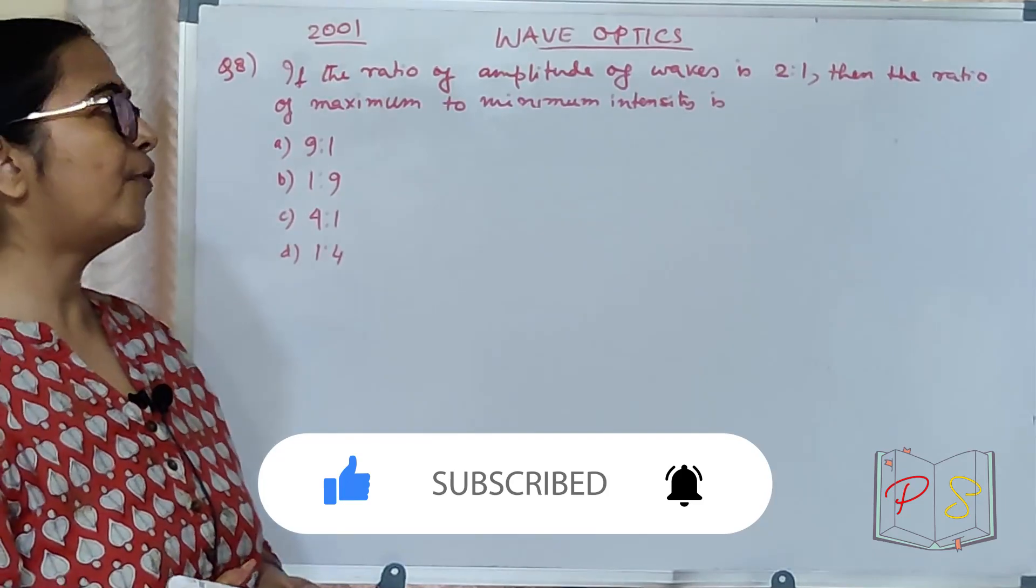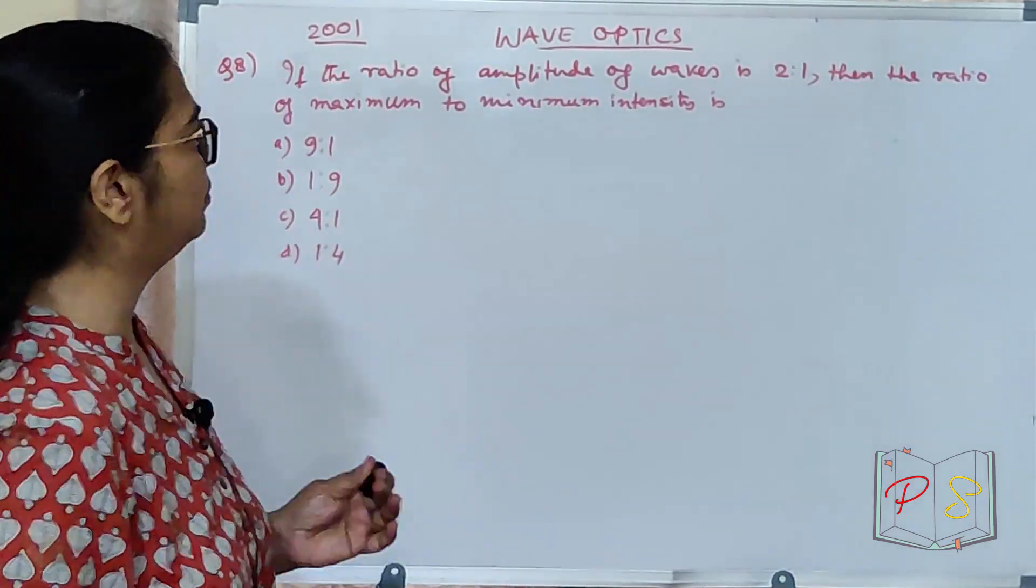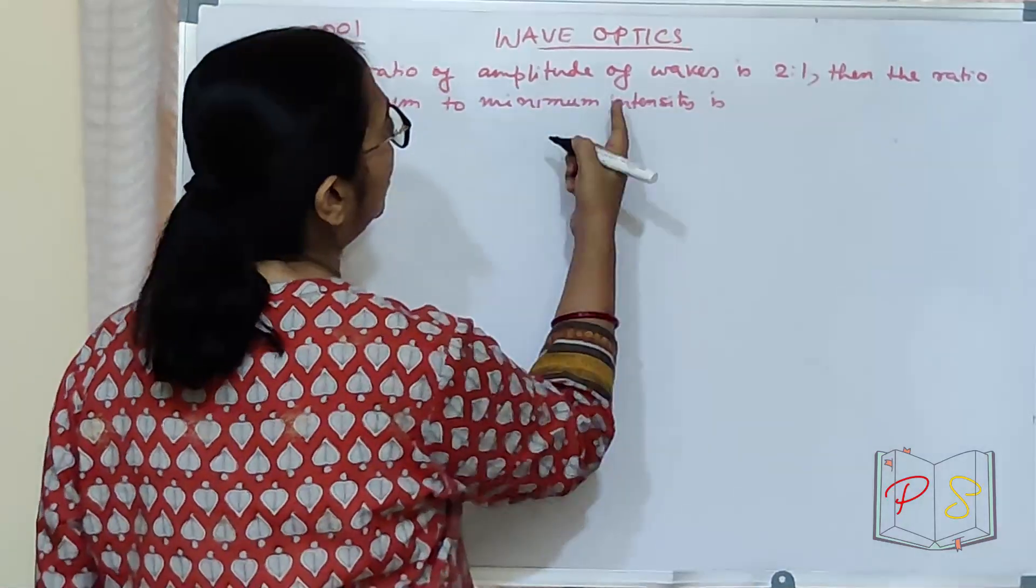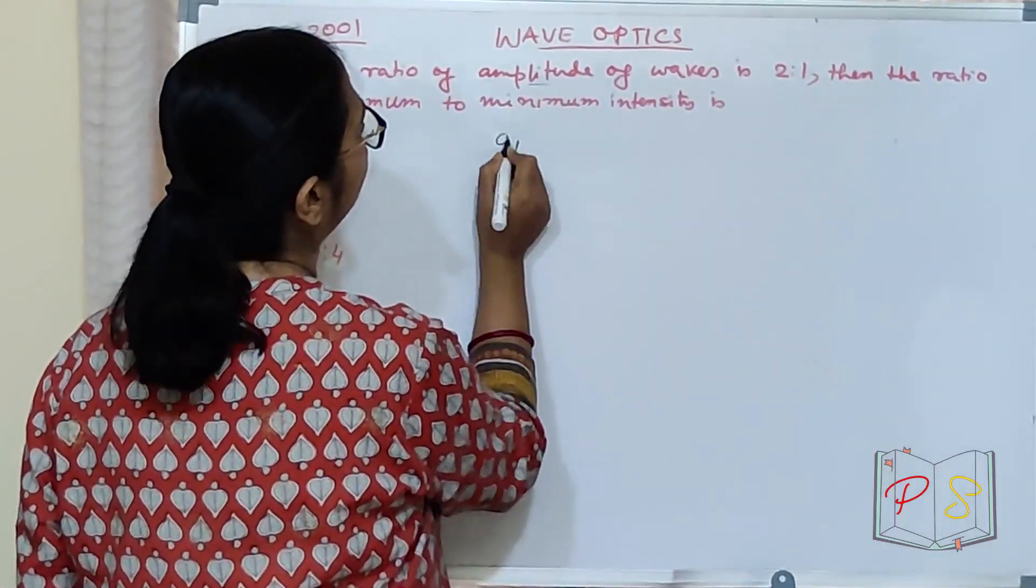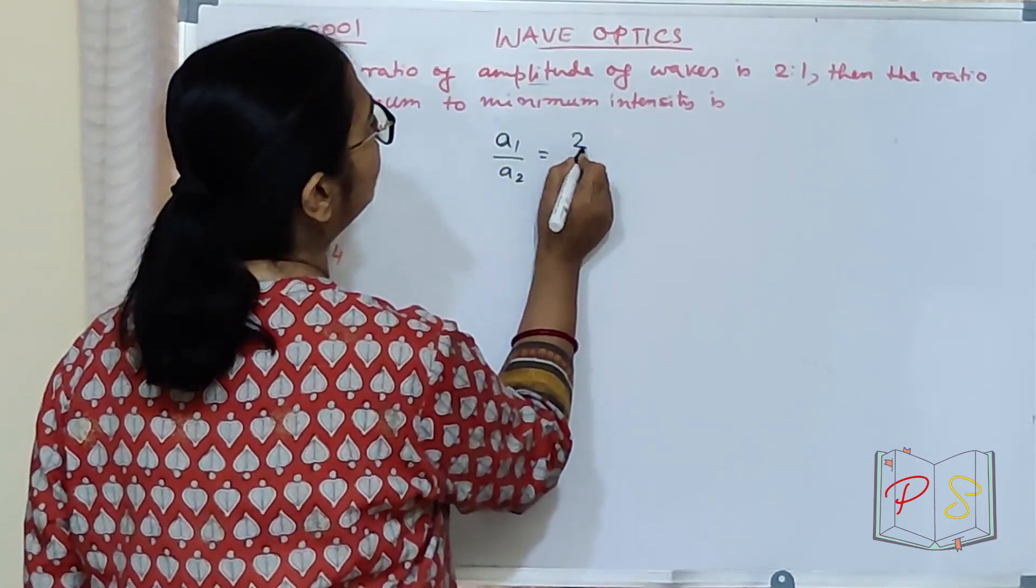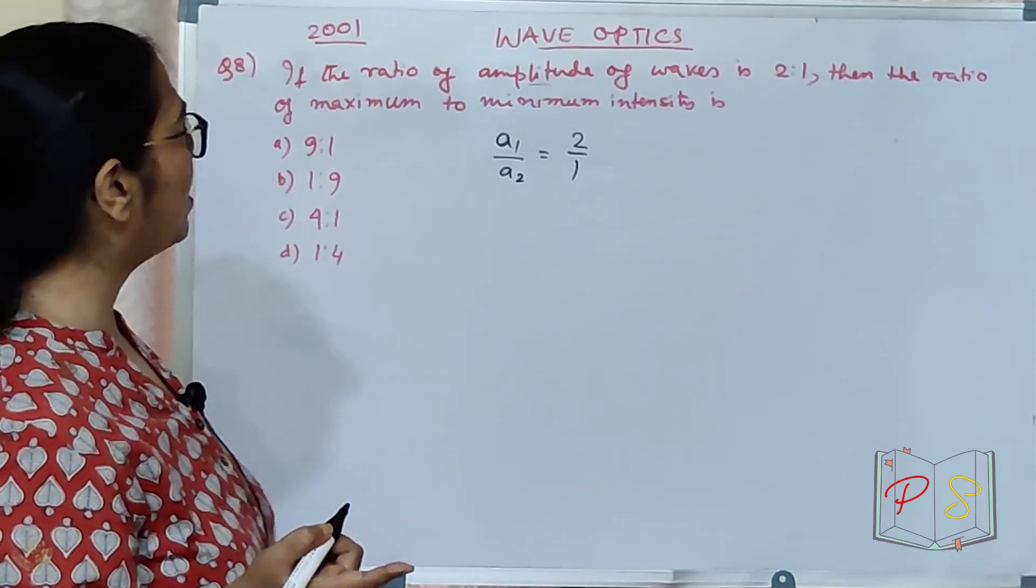Ratio of amplitude of waves is 2 is to 1. So, ratio of amplitude. So, A1 by A2. A1 by A2 equal to 2 is to 1. Then the ratio of maximum and minimum intensity.